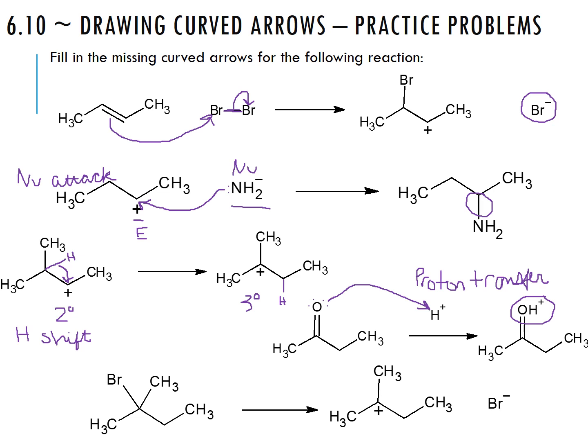In the last example, we have a bond between a carbon and a bromine; in the product we have a carbocation and a bromide. Because bromine is no longer bonded, it needs to break away from the molecule, and because it's negatively charged, it takes those electrons with it. Drawing the arrow from the bond right onto that bromine: this is a loss of a leaving group.